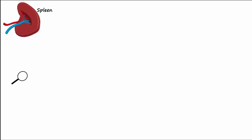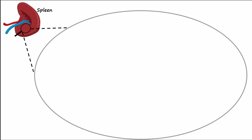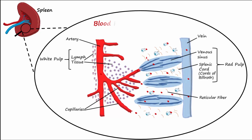Magnifying a section of the spleen, we find the splenic cords, or cords of Billroth, located in the red pulp, which contain many small strands called reticular fibers.